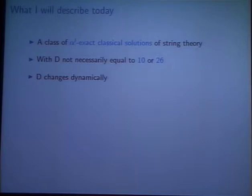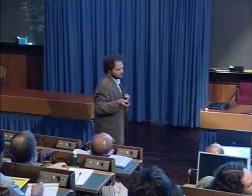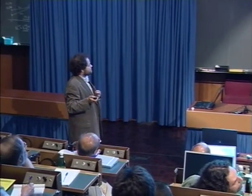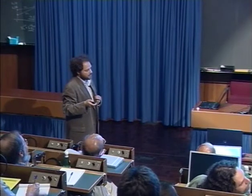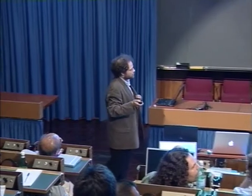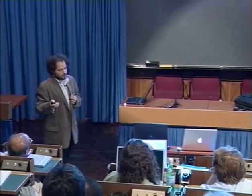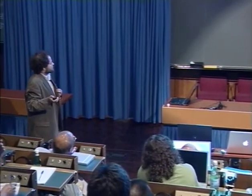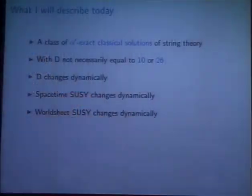Today I'm going to describe an alpha prime exact set of classical solutions of string theory with the number of dimensions not necessarily equal to the critical dimension. In many of these cases, the space-time dimensionality changes dynamically as a function of time. The amount of space-time supersymmetry changes dynamically - it can go from broken to unbroken. In some of these solutions, world-sheet supersymmetry changes dynamically, broken spontaneously in a dynamical way.